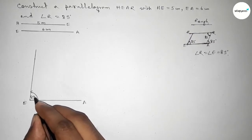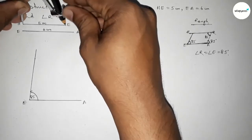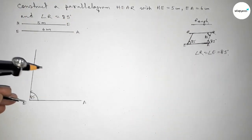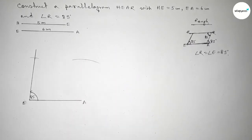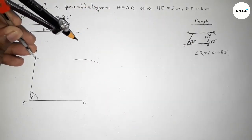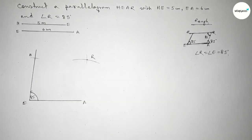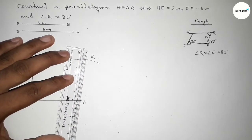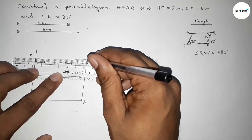Next taking the length HE equal to 5 centimeter by using compass, putting the compass here and cutting with the same length, drawing an arc here. Now taking the length EA equal to 6 centimeter, putting the compass here and cutting the arc. Taking here point H and here R. Now joining AR first, then joining the line HR.